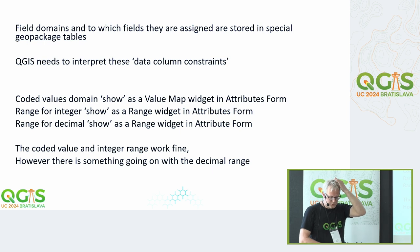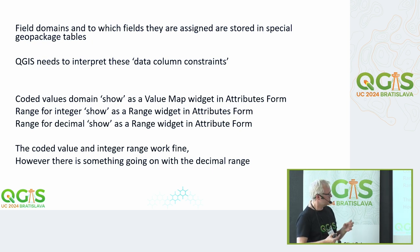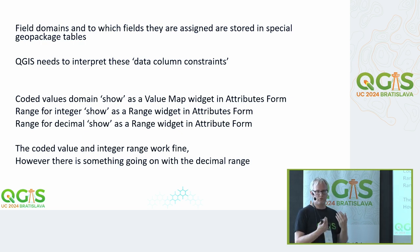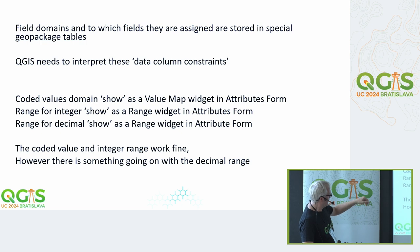Field domains and the fields they apply to are stored in special GeoPackage tables, accessible via SQL. QGIS interprets these data column constraints using the attributes form system. A coded value domain automatically creates a value map widget pre-populated with the domain values from your GeoPackage field domain. The same goes for a range: if you have an integer range, QGIS automatically creates a range widget with the minimum and maximum values. For decimal ranges you also get a range widget.